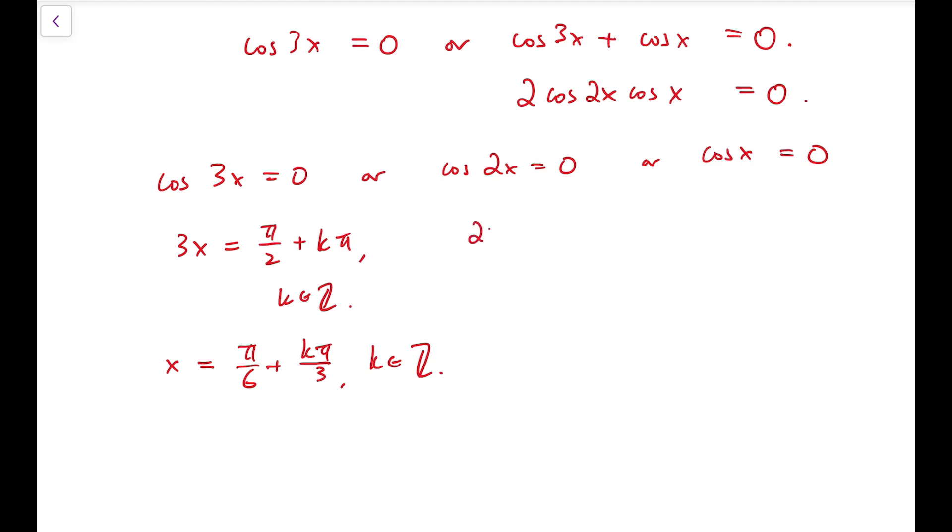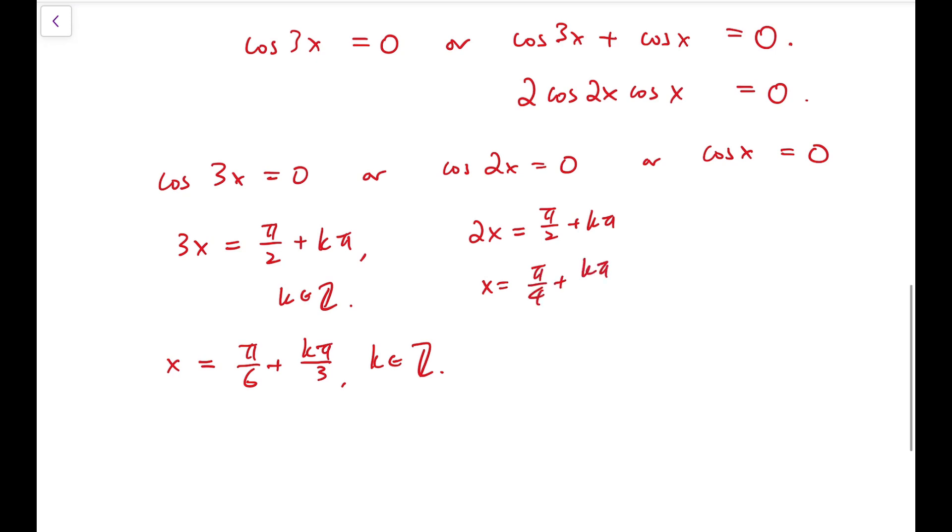For the second case, we get x = π/4 + kπ/2. For the third case, x = π/2 + kπ where k is an integer.